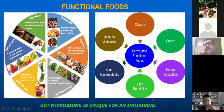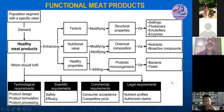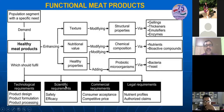Here is a brief summary about the development of functional meat products. These are healthy products, and four aspects must be covered: technological, scientific, commercial, and legal. This is done by enhancing texture, nutritional value, and health properties. For health properties, we can add phytochemicals, probiotics, or fibers. These are multiple approaches for developing functional meat products.